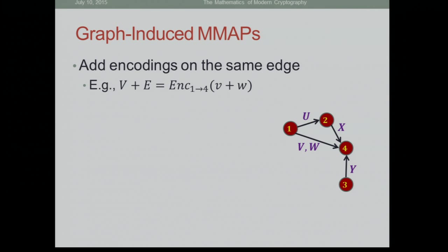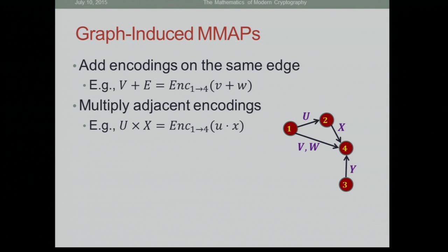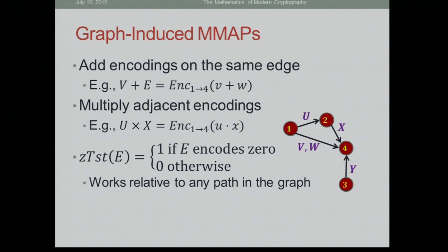Once you have these encodings, the operations you can do are: add or subtract encodings relative to the same edge. V and W are encoded relative to the edge from 1 to 4, so you can add or subtract them. Also, you can multiply matrices that are on adjacent edges in a path. U and X are on one edge after another, so you can multiply them and get an encoding of the product U times X relative to the path from 1 to 4. And you can perform a zero test — if you have an encoding anywhere in the graph, you can test whether it encodes zero or not.